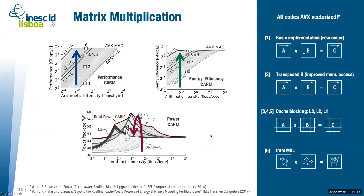Looking at the matrix multiplication example for the energy efficiency and power cache-aware roofline models: energy efficiency was not surprising — it followed the performance model, since the difference in values between GFlops and Watts was dominating. With each performance improvement, we also got better energy efficiency.